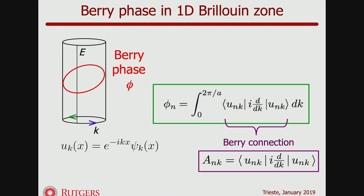A Berry phase is defined for a one-dimensional insulator. I've drawn the one-dimensional Brillouin zone here as a loop instead of a segment because pi and minus pi are identified, and I've plotted the energy band vertically. The loop supports topology or at least a geometric phase. u_{nk} is the cell-periodic Bloch function. From the derivative with respect to k you define the Berry connection, and the Berry phase is basically an integral of the Berry connection over the Brillouin zone. The Berry phase is well-defined modulo 2π.